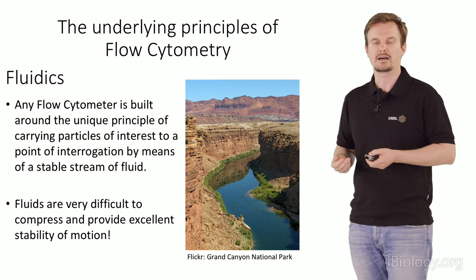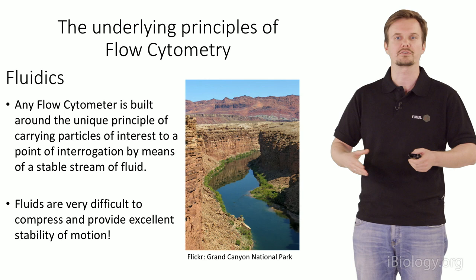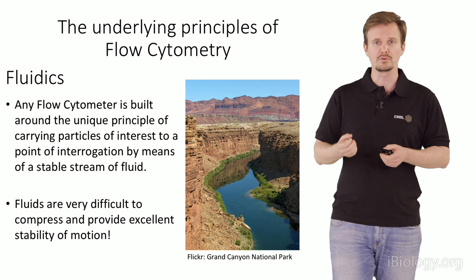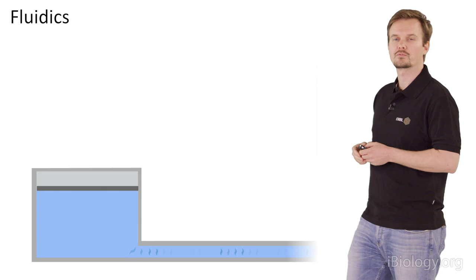The first thing we have to think about is fluidics. In the flow cytometer, we have a system that runs like a river. In perfect conditions, this river always flows at a certain motion with a certain volume per time. In the flow cytometer, we have a system which runs with a laminar flow, transporting a certain volume in a certain time, so we always have constant speeds. Fluids are perfect for this because they're very difficult to compress — when we apply a constant pressure, we also have constant flow.